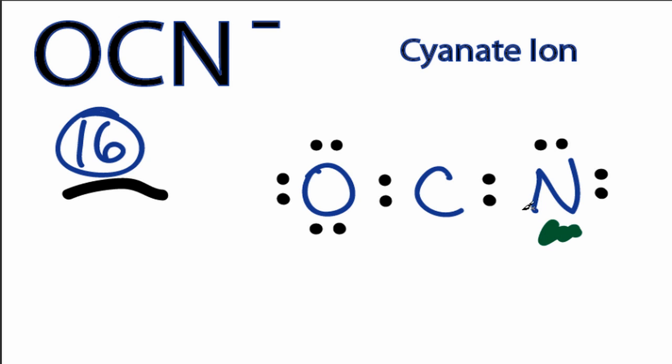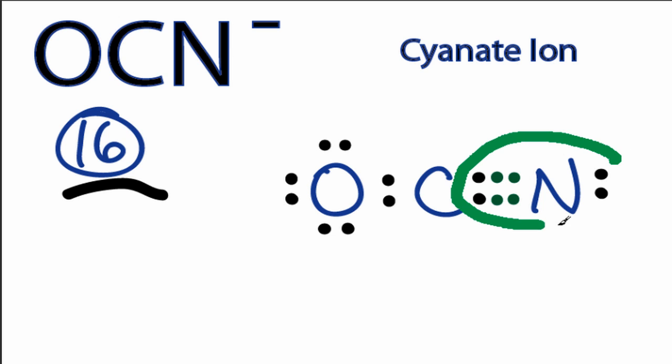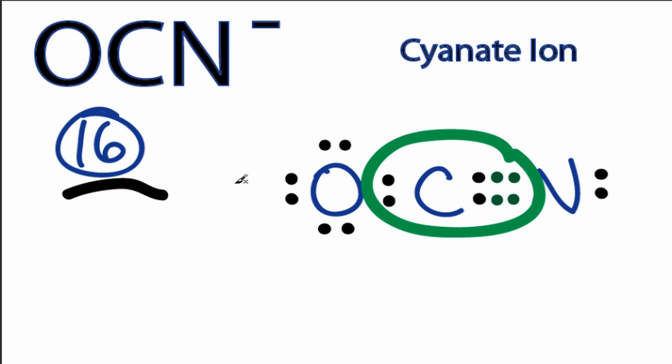So let's take 2 from here and form a double bond, and now the carbon has 6, so we need to move 2 more. Let's put those in there. So now nitrogen has 8, but the carbon also has 8. And we're still only using 16 valence electrons.